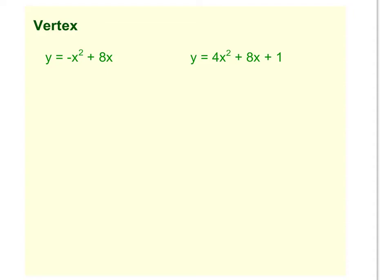So the vertex of a parabola, if you think about what a parabola looks like, that vertex is going to be either the highest point or the lowest point. So in this case, that's where the vertex would be.